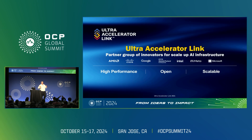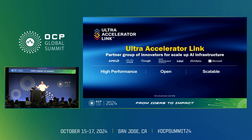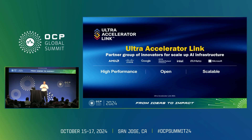The original promoters got together to define the Ultra Accelerator Link. First, it has to be open — that's the most important thing — so anybody in the industry can join and help shape it. Second, it has to be high performance, ensuring real-time inference and very fast training. And finally, it had to be scalable — starting with small models, direct connected if needed, but scaling through a switch up to 1,000 devices.